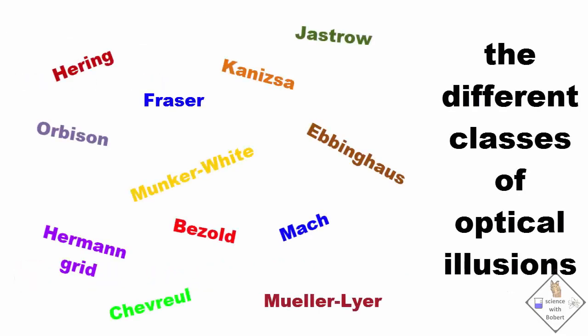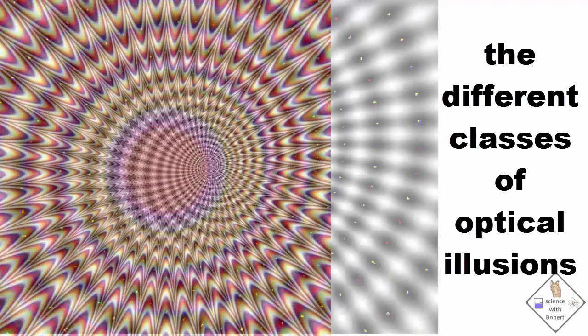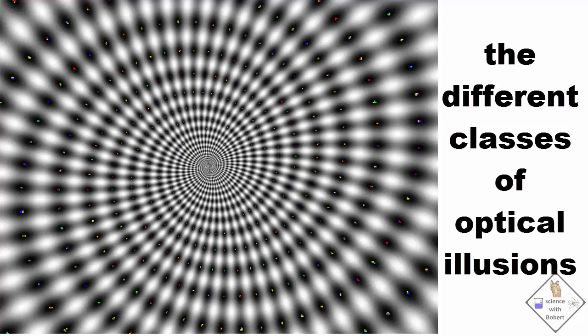Here are some different classifications of optical illusions. When we fixate on a pattern, it momentarily remains on our retinas as an after image. Some theorize that small involuntary eye movements cause this ghost image to overlap with the image we are fixating on and the result is a vibrating image.